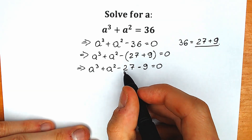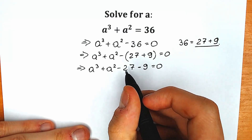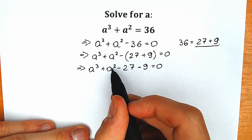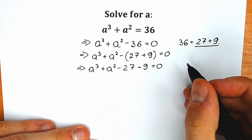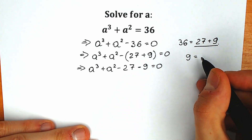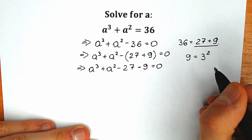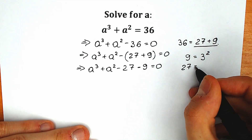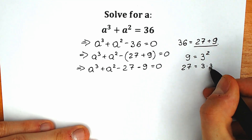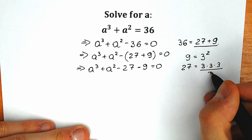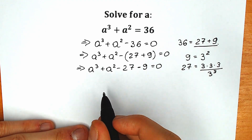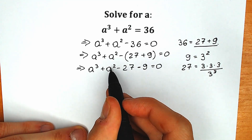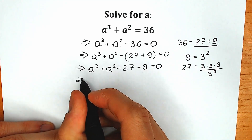Let's look closely. We have 27 and we have 9. Before this, we have a cube and a square — the third power and the second power. 9 can be written as 3 squared, so we can write it in terms of squares. And 27 can be written as 3 cubed — 3 times 3 times 3. So right now let's change it and then group it — cubes with cubes and squares with squares.